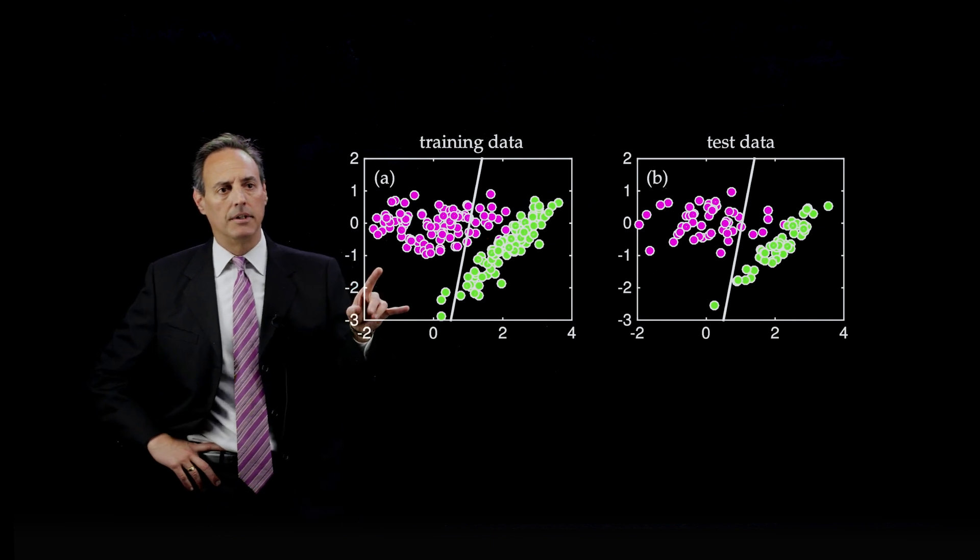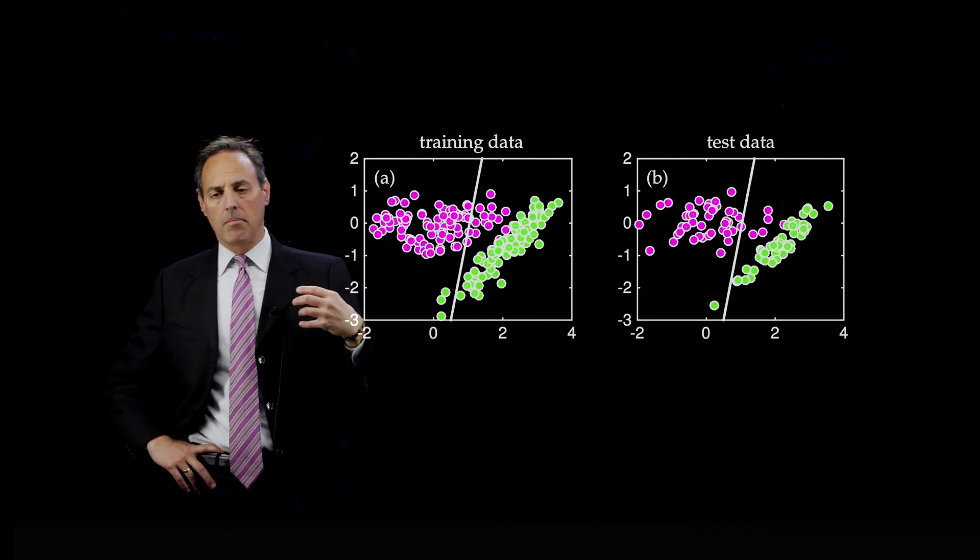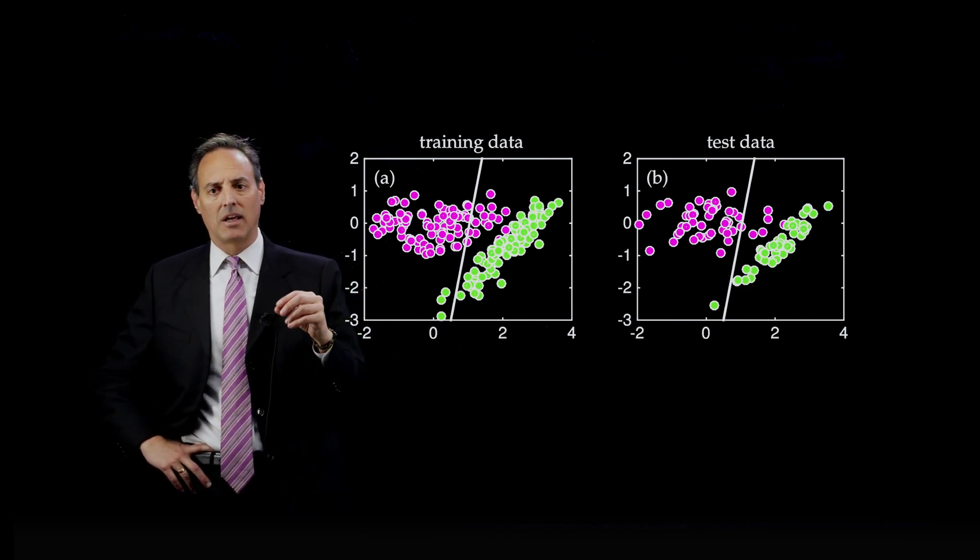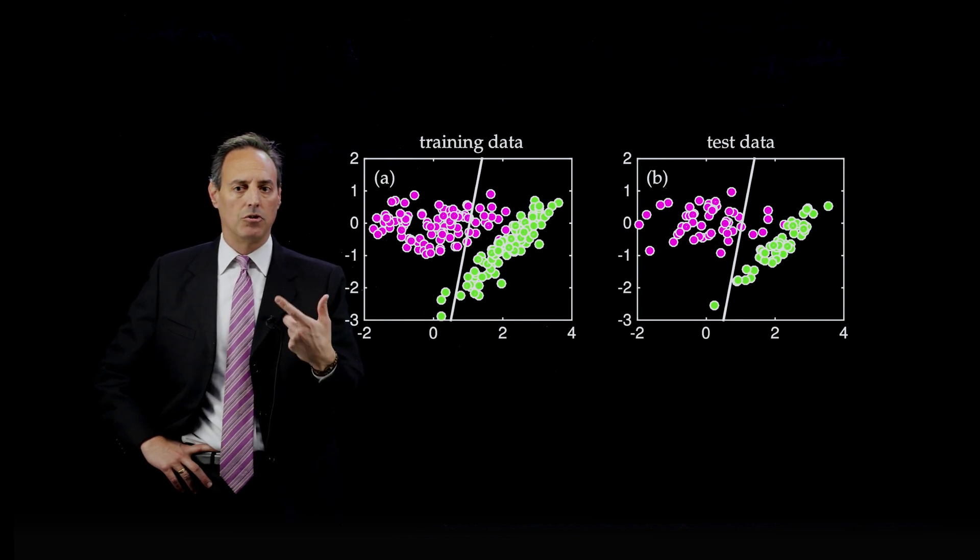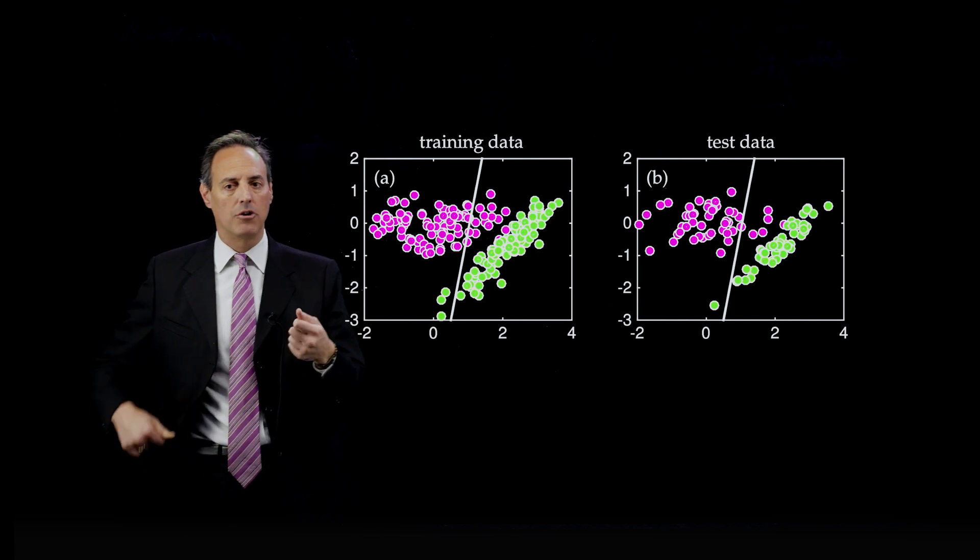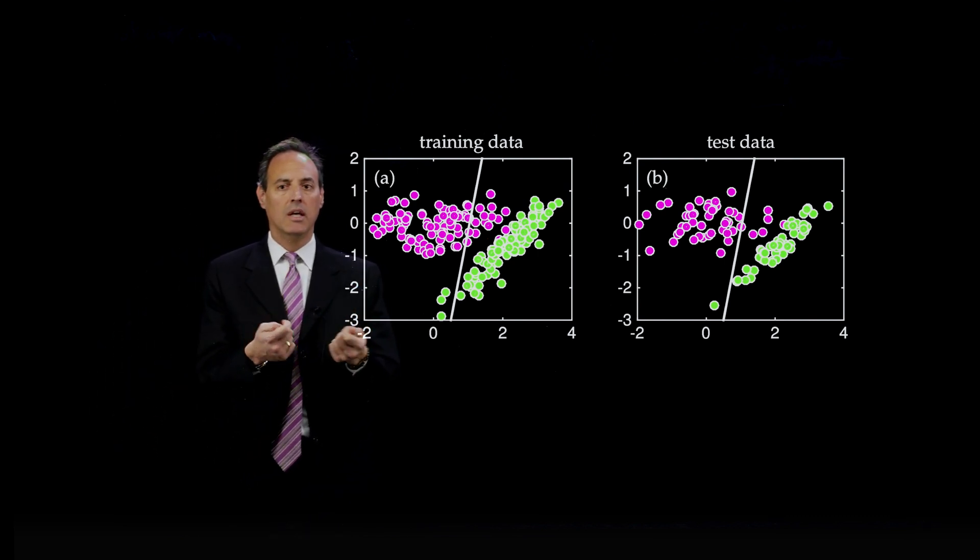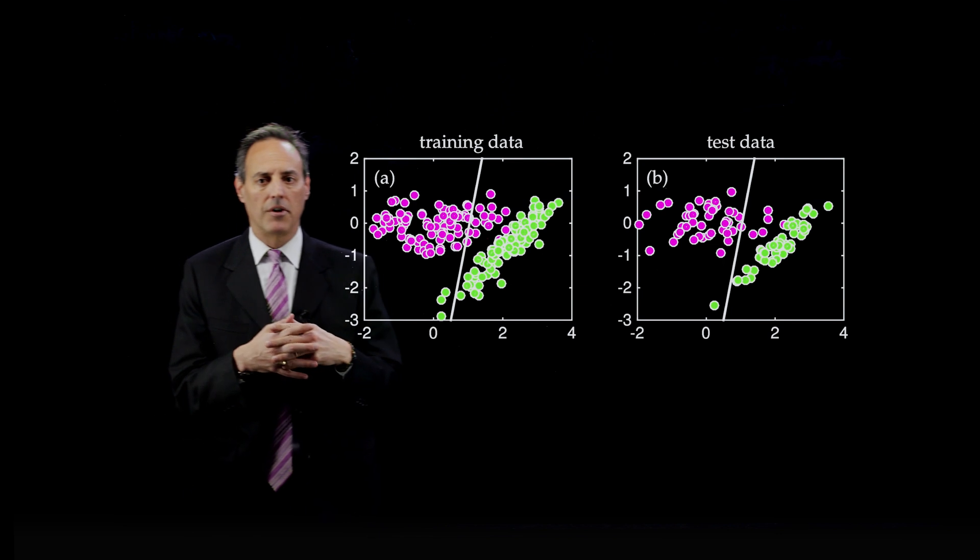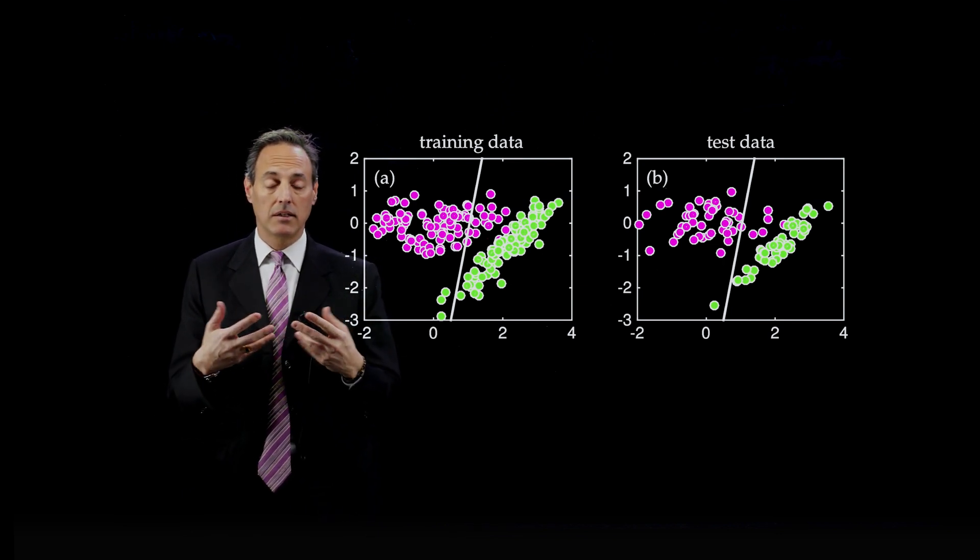Now, the one thing I want to highlight here is part of what makes a successful k-means is not only the number of clusters you pick, but also how you guess the initial conditions. In other words, how do you guess the initial cluster centers? So, the nice thing about the k-means algorithm in MATLAB, there are smart ways to do guessing.